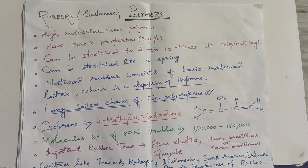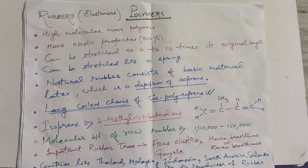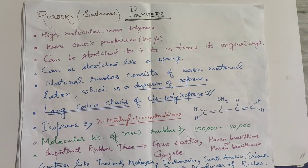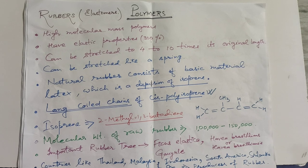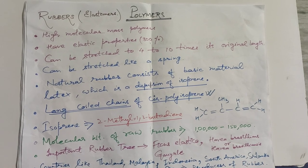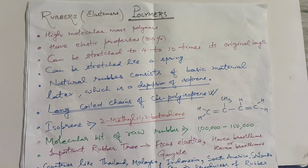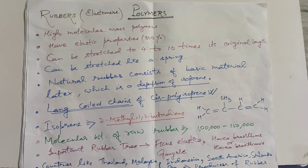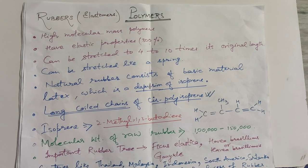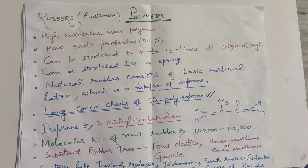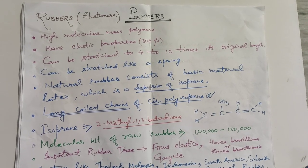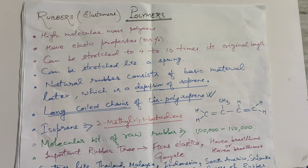The leading producers of rubber in the world are countries like Thailand, Malaysia, Indonesia, South America, Sri Lanka, and India. Thailand is the largest producer of rubber in the world.